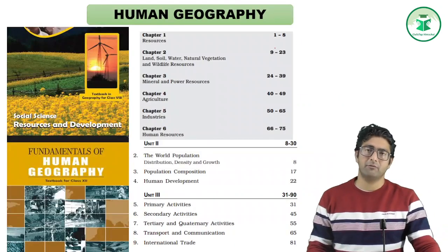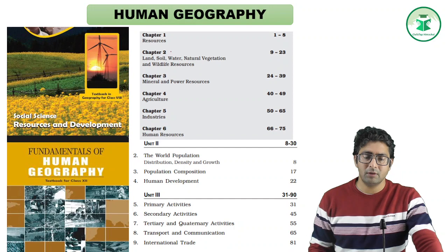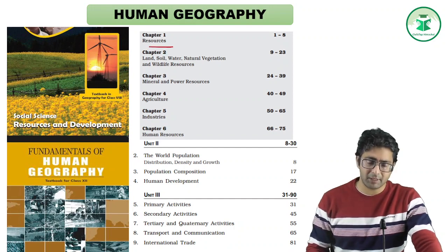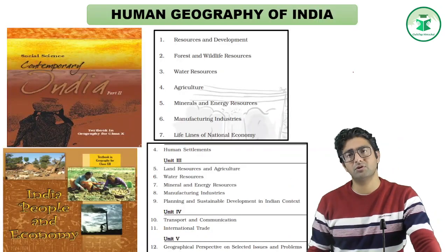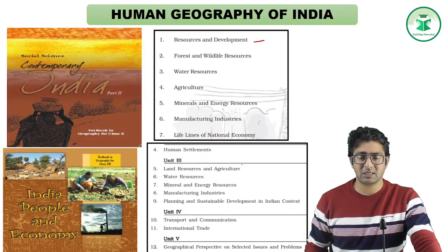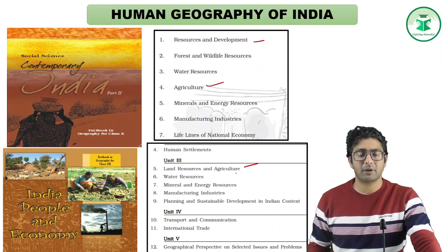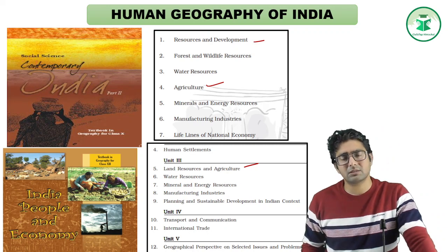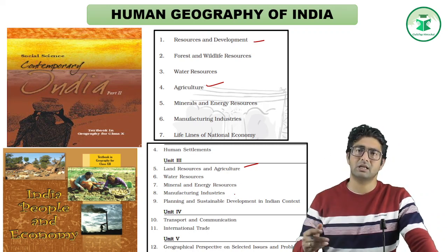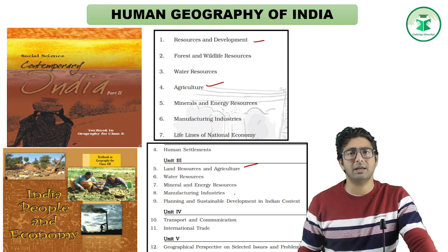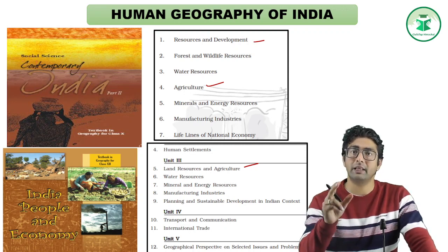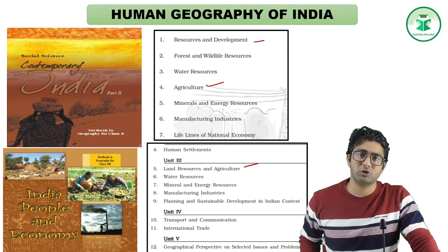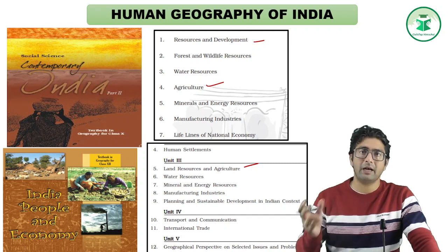For the 12th and 10th class NCRTs for Human Geography, the same chapters overlap: Resources, Agriculture, Water Resources, Mineral Resources, Manufacturing Industries — all these chapters are verbatim the same, so read them together with vertical linkages. This is how we approach NCRTs using vertical linkages. Now, what are the advanced books for geography?